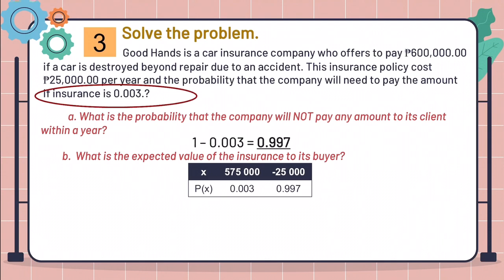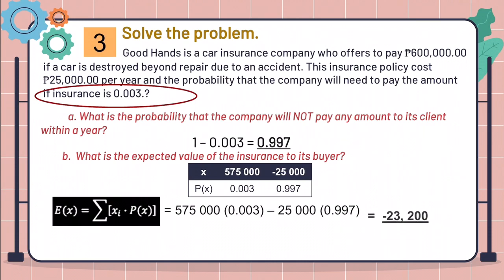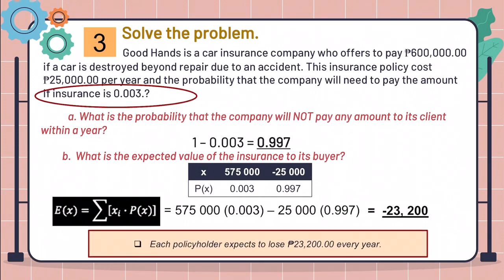Since P600,000 is the offer, we will subtract it to P25,000, and we will have P575,000 left. And then we will put the negative P25,000 since we paid for the insurance policy. We are going to use this formula, so this will become now P575,000 times 0.003 minus P25,000 times 0.997, and the answer would be negative P23,200. We can interpret this as each policyholder expects to lose P23,200 every year.